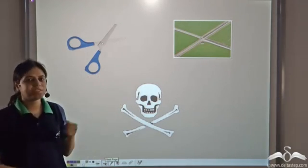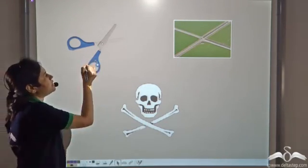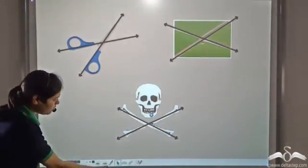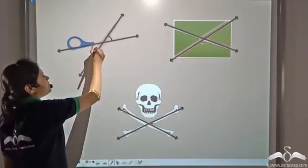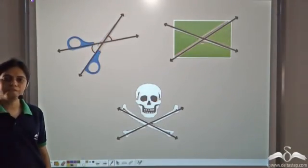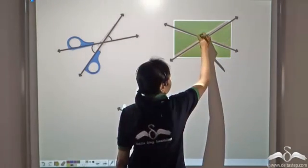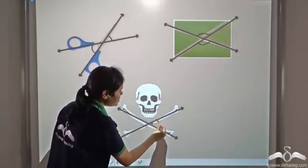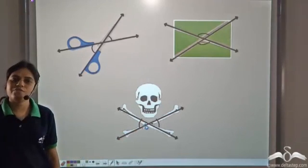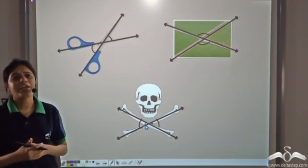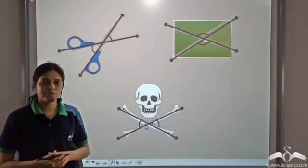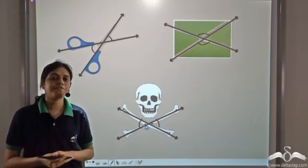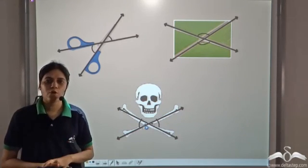Now if you look at these pictures, we see certain angles being formed. These are vertically opposite angles. In this, we have a pair of vertically opposite angles, and in this danger sign, we have a pair of vertically opposite angles. But why are we studying these vertically opposite angles? What is the use of studying them? Let us see if we can find a relation between the vertically opposite angles.